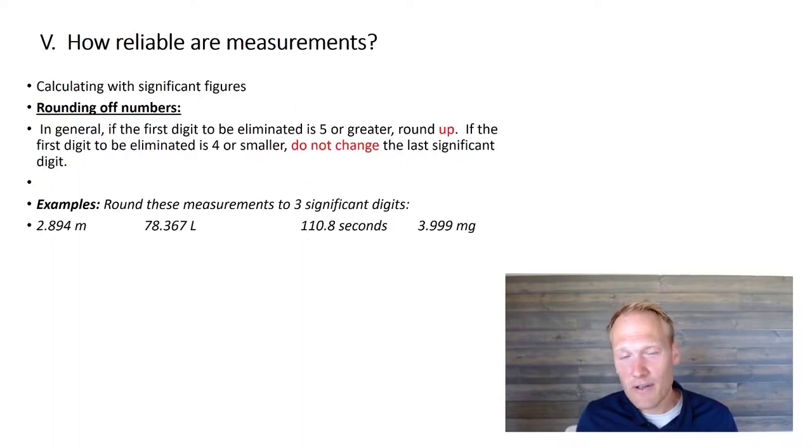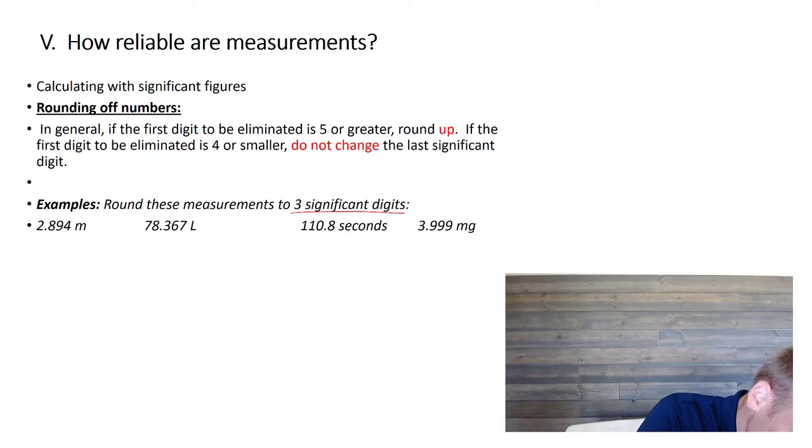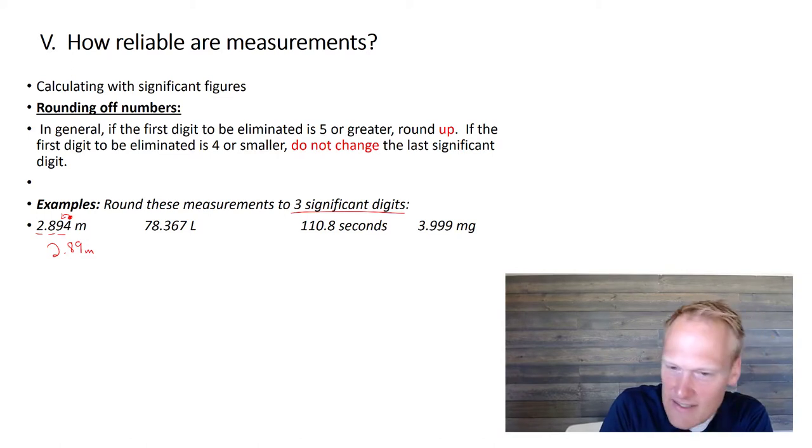In the near future, we are going to start doing math with significant figures. It is going to be critical that you know how to round off numbers correctly. So, for instance, if you look down here at the bottom, the rounding rules are the same as you've known in the past. A 5 and up would round up, and a 4 and below would round down. The key that you need to know is how many significant figures you're rounding to. So, for this first one, we want to round to 3 significant figures.